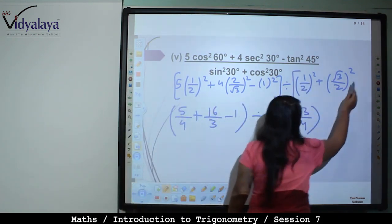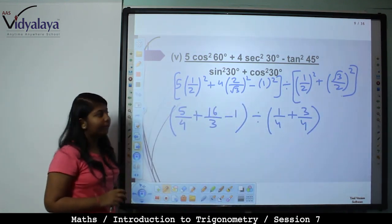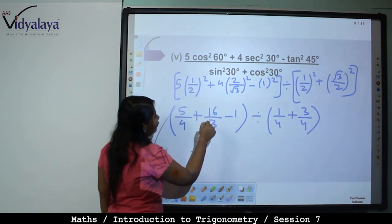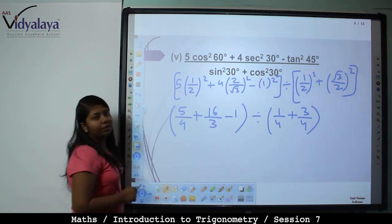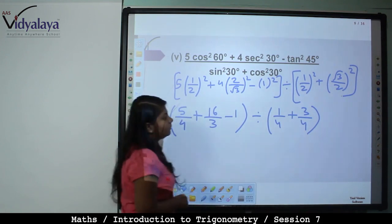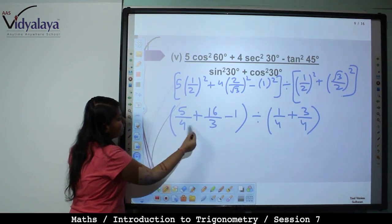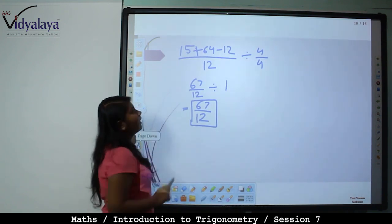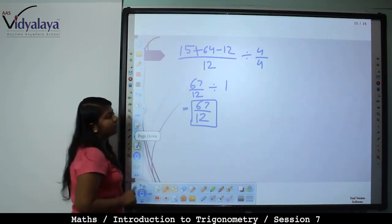Squaring: 5 by 4, plus 4 into 4 by 3 is 16 by 3, minus 1, divided by 1 by 4 plus 3 by 4. The denominator becomes 4 by 4, that is 1, so that part is gone. Take LCM 12 for the numerator: 15 plus 64 minus 12 by 12. The final answer is 67 by 12.